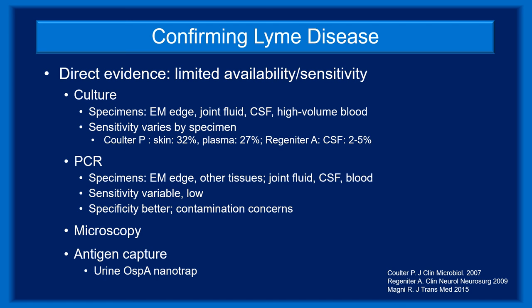Microscopy may be able to identify the bacterium, but there are several challenges. Because spirochetemia is short-lived, blood is a poor specimen, and bacterial numbers in tissues are usually quite low. Additionally, clinicians would need to ask a consulting pathologist to specifically look for Borrelia burgdorferi, as this requires special staining techniques. Antigen capture techniques are also being applied to Lyme disease. A recently reported method uses Nanotrap technology to identify Borrelia burgdorferi antigens in the urine — it was highly sensitive for early disease, but less so for persistent disease.